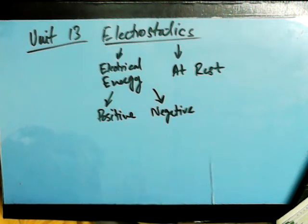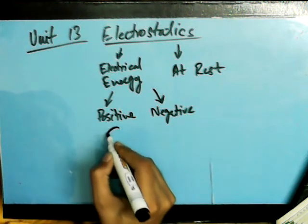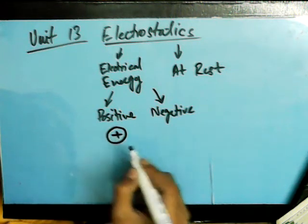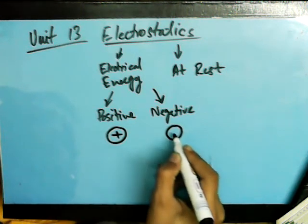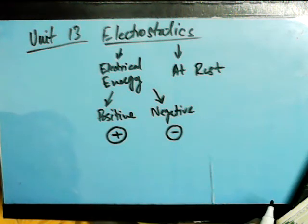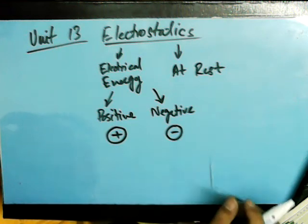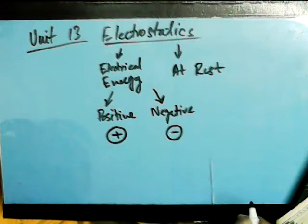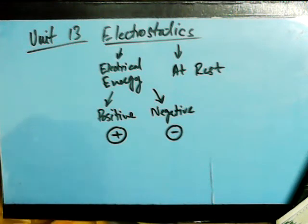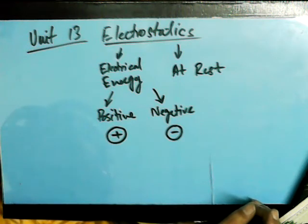When we are trying to discuss these energies, we usually associate them as point charges. Consider these are point charges — they have no masses, but they are charged, they have energy. These are particles of energy, one being positive and the other being negative. When we are talking about electrical charge, we are trying to consider the fact that these are produced when electrons jump from one point to another.